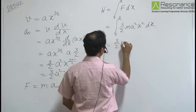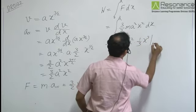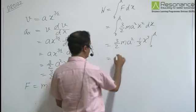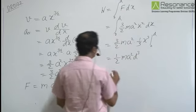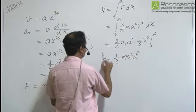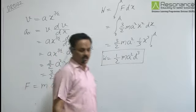We can write 3/2 MA² times 1/3 X³ evaluated from 0 to D, which equals 1/2 MA² D³. This is the work done in taking the particle from 0 to A.